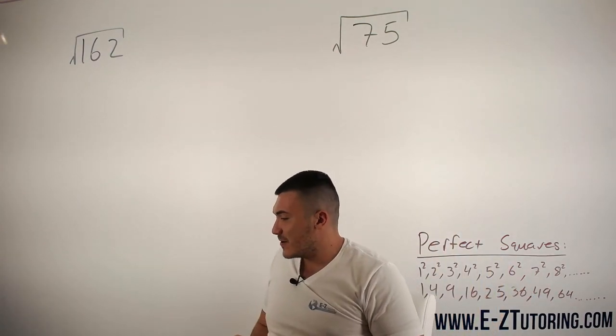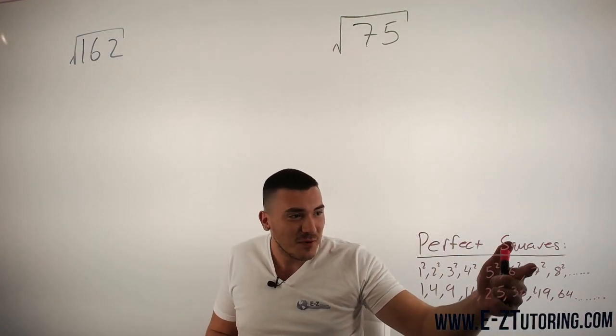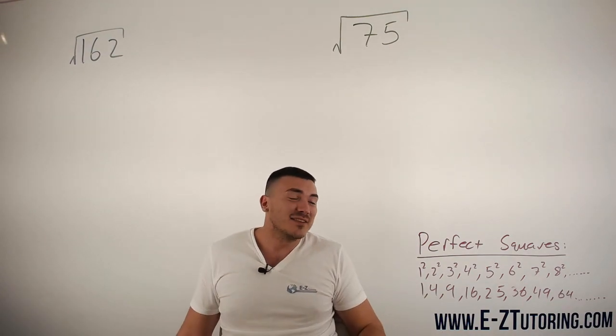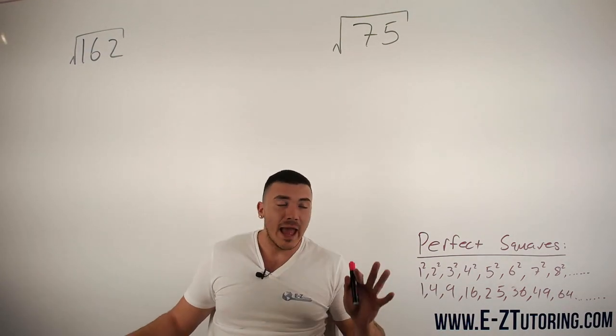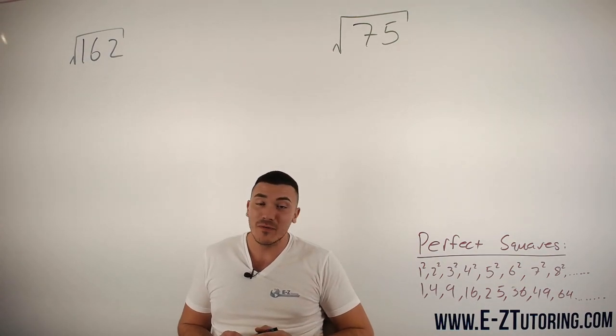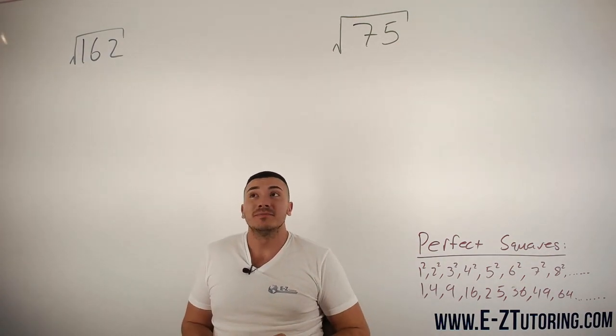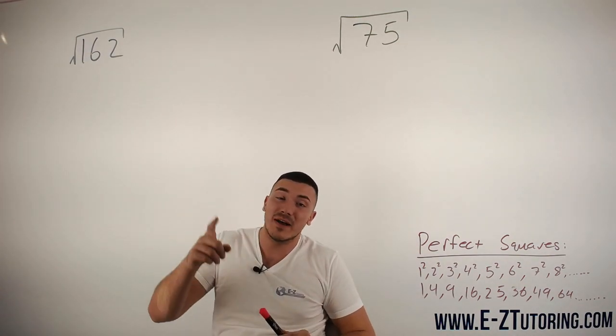And that is how you find your perfect squares because 8 squared is 64, 7 squared is 49, so on and so forth. So after you are familiar with your perfect squares, very important to know, then we can go ahead and start simplifying these numbers.